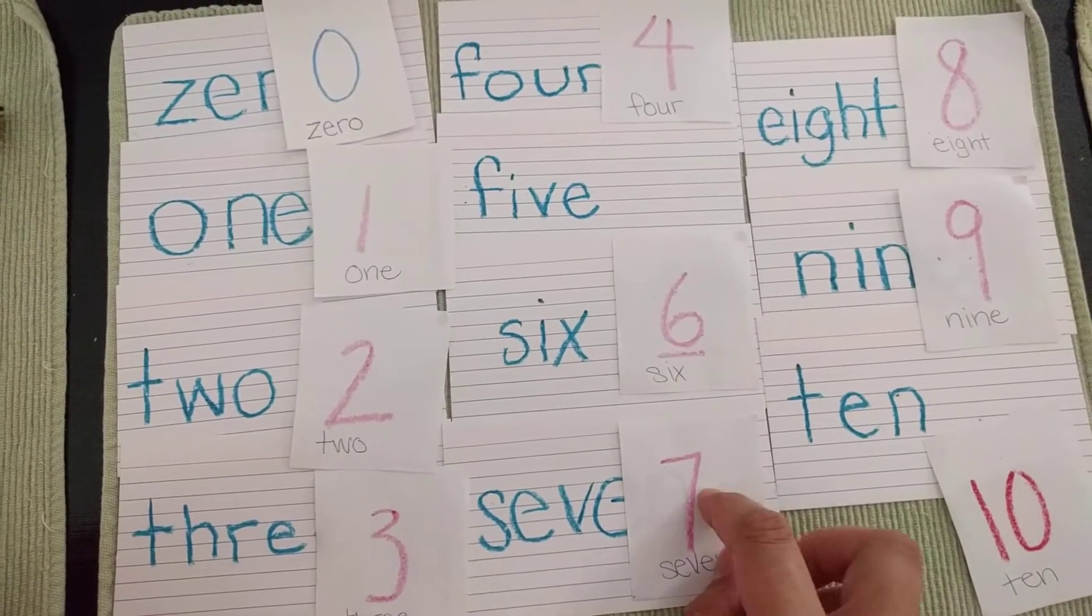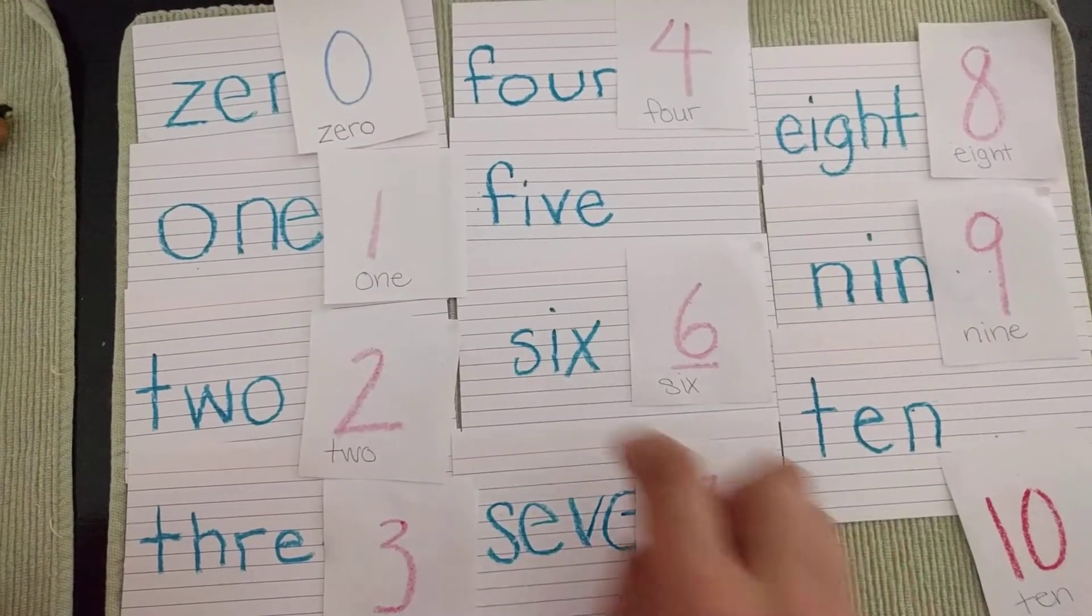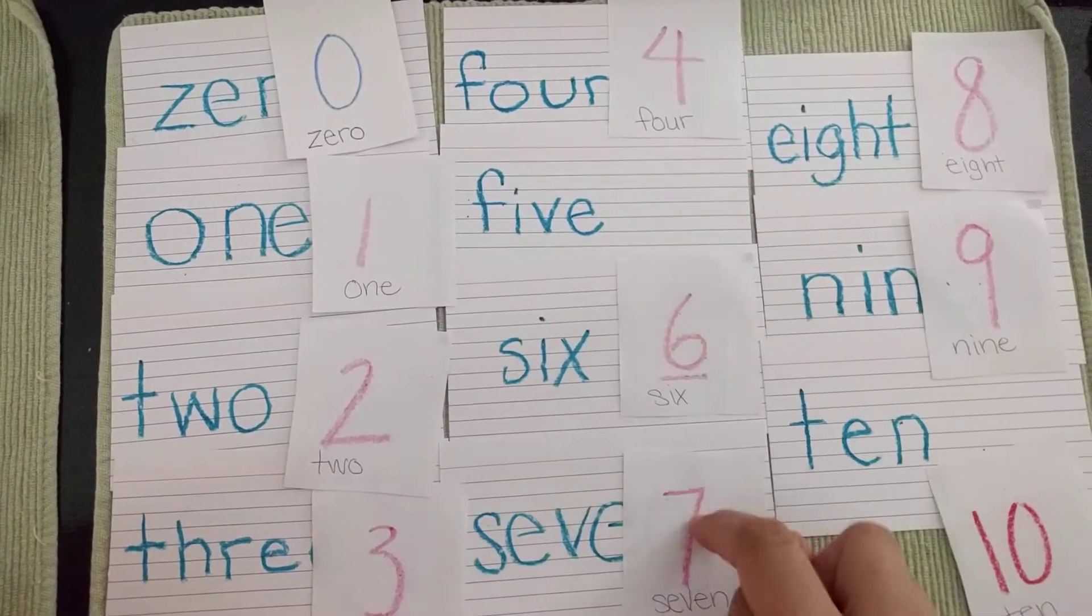I think that one's going to be seven. Let's check it. One, two, three, four, five, six, seven.